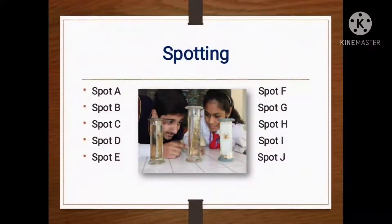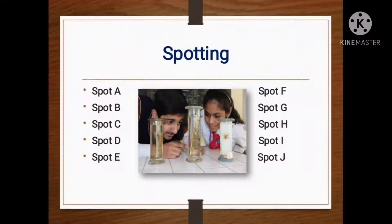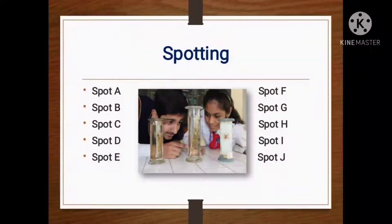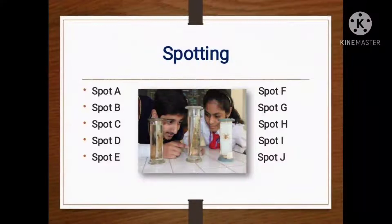In the Spotting, for your examination, Spot A, Spot B, Spot C, Spot D, Spot E, Spot F, Spot G, Spot H, Spot I and Spot J will be there. Spotting means that a specimen will be in front of you. You have to observe that specimen, you have to identify it and you have to comment on it — that is known as the Spotting. Now in today's video, we are going to study about Spot I.